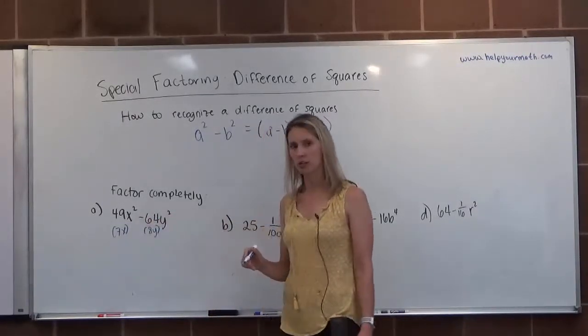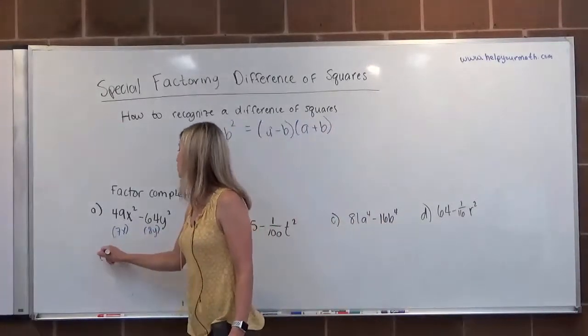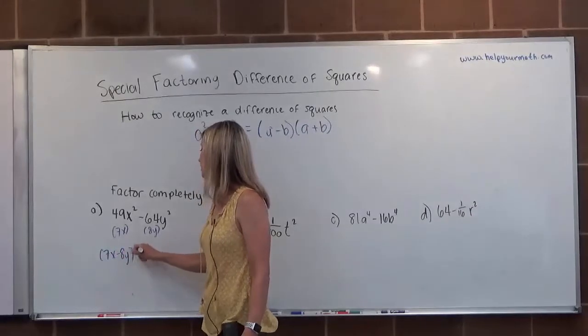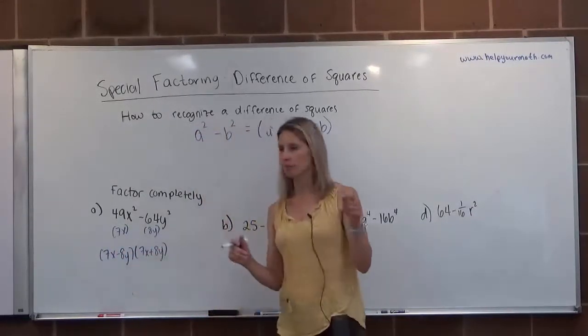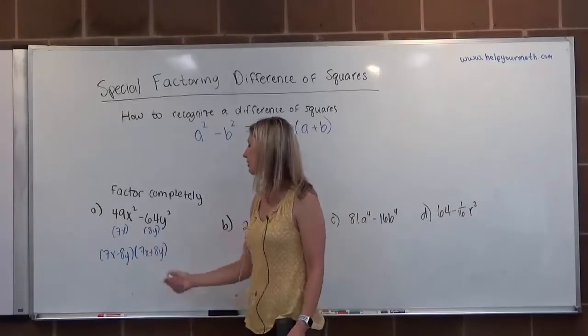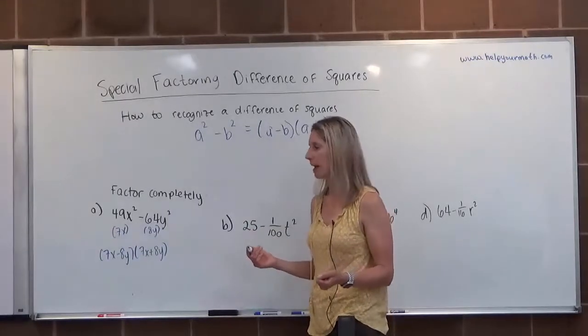I see the subtraction, so that means this is a difference of squares. So it will factor into root minus root times root plus root. And of course, if you put this factor first and have 7x plus 8y times 7x minus 8y, that's fine. The order of the factors doesn't matter.